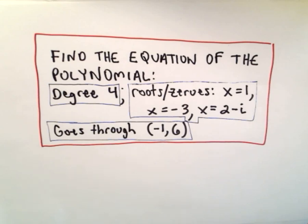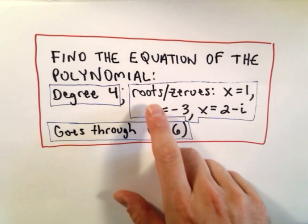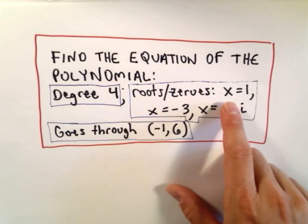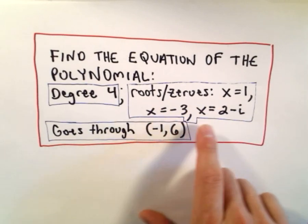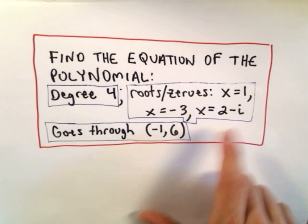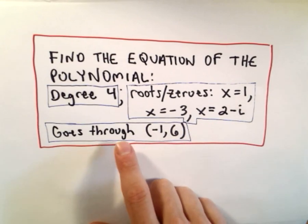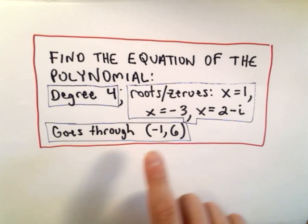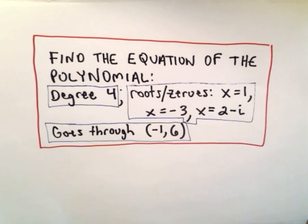In this video I'm going to find the equation of a degree 4 polynomial. We're given that the roots or zeros or solutions are x equals 1, x equals negative 3, and x equals 2 minus i. We also know that the polynomial goes through the point negative 1 comma 6.